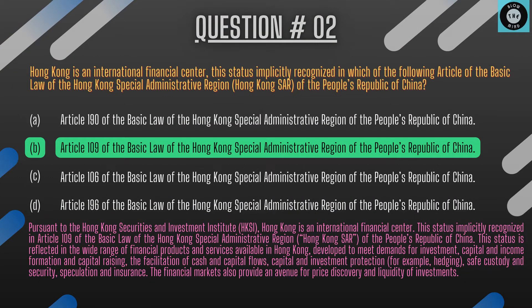The explanation: Hong Kong is an international financial center. This status is implicitly recognized in Article 109 of the Basic Law of the Hong Kong Special Administrative Region of the People's Republic of China. This status is reflected in the wide range of financial products and services available in Hong Kong, developed to meet demands for investment, capital and income formation and capital raising, the facilitation of cash and capital flows, capital and investment protection, safe custody and security, speculation and insurance. The financial markets also provide an avenue for price discovery and liquidity of investments.